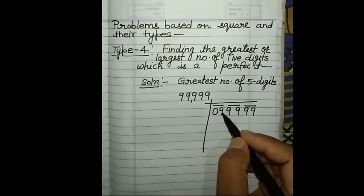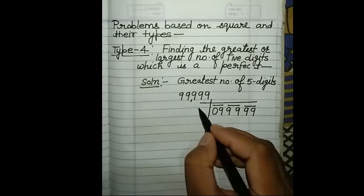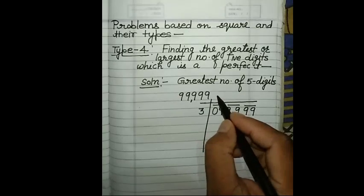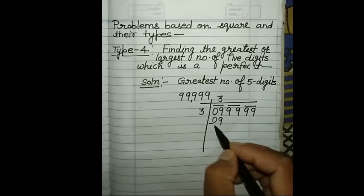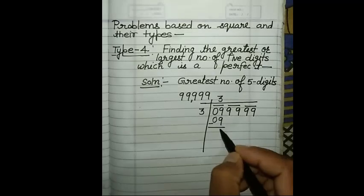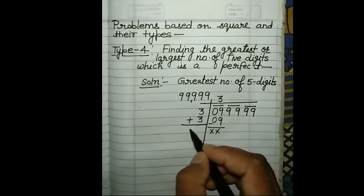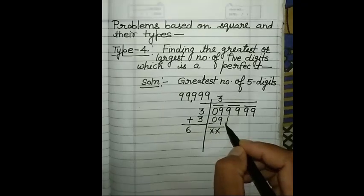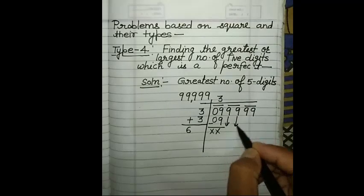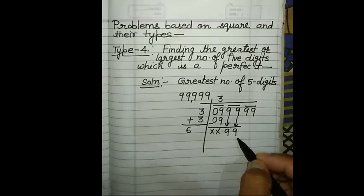We will make pairs: a first pair, a second pair, and a third pair. If there is no number, you add 0. Now we find the square root by long division. The first pair is 09. We try 3: 3 times 3 is 9. Subtract 9 — it cancels out.